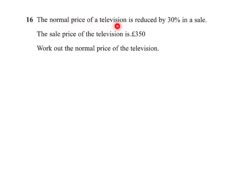So we're told the normal price of a television is reduced by 30% in a sale, and the sale price of the television is £350. Work out the normal price of the television.